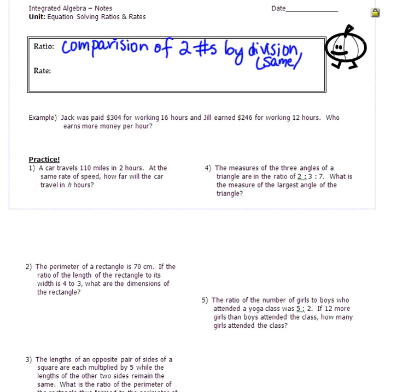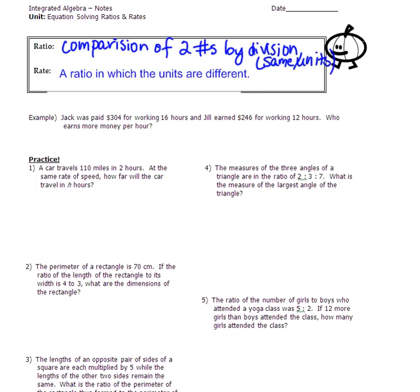A rate, on the other hand, is a ratio in which the units are different. That is like your miles per hour, miles per gallon, feet per second, whatever.